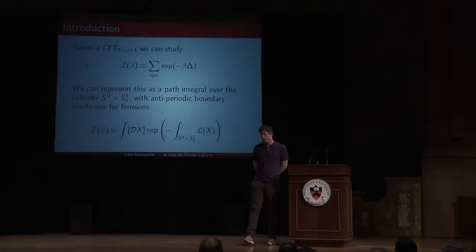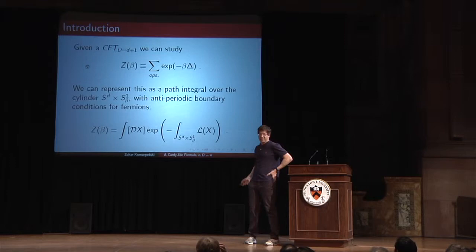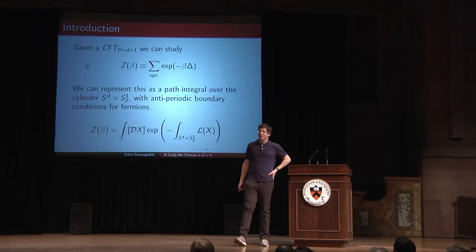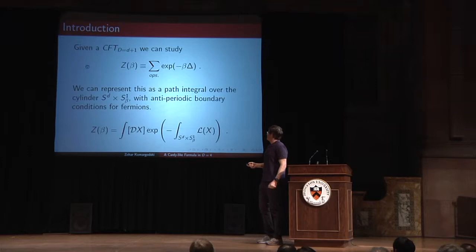In conformal field theories in D dimensions, it's generally interesting to take all the operators of the theory, compute their dimensions, and form a statistical sum of the type e to the minus beta times delta, where delta is the dimension of the operator. This gives you an interesting function of beta that can be used to estimate how many operators of large dimensions there are and how the density of operators behaves.